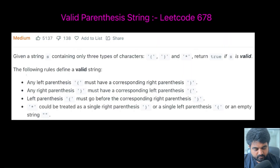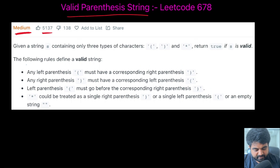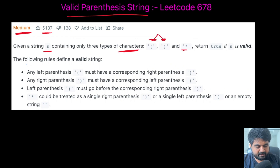The LeetCode problem we are going to solve is called Valid Parentheses String. This is a LeetCode medium problem and also a very well-liked problem. We are given a string s that contains only three types of characters: open parentheses, closed parentheses, and a star.